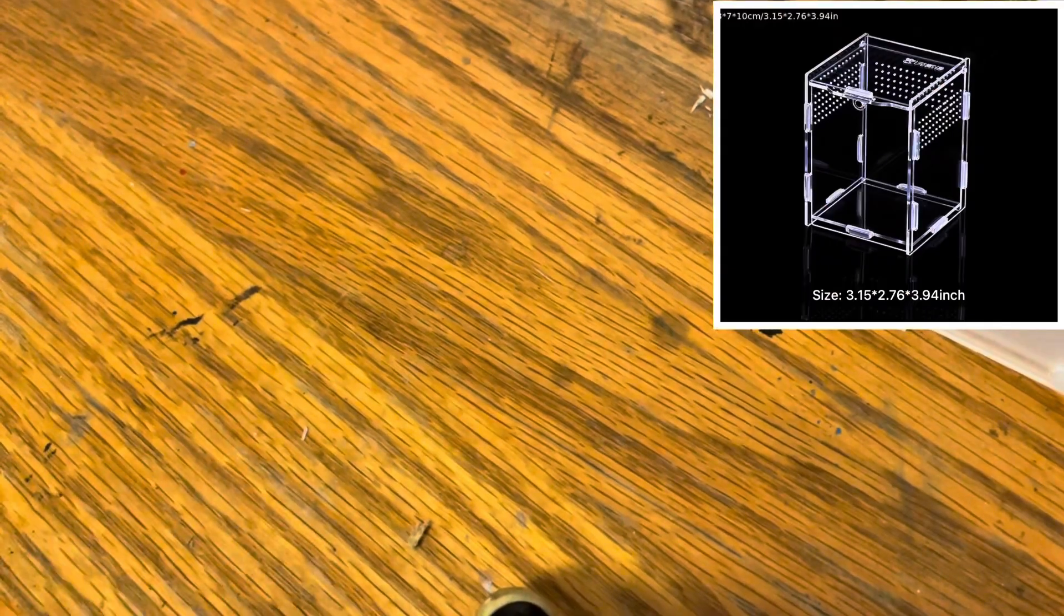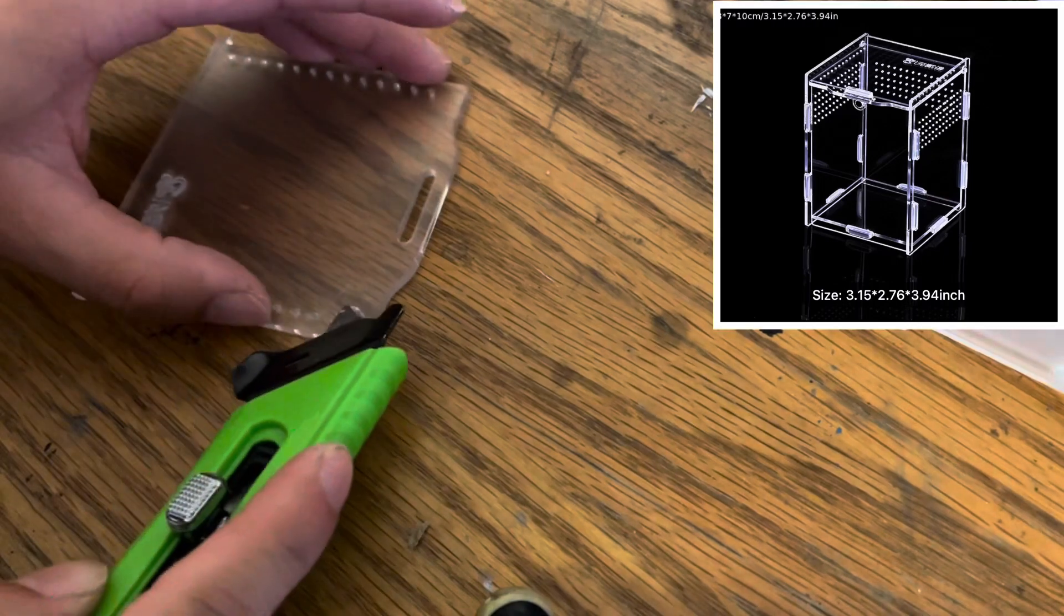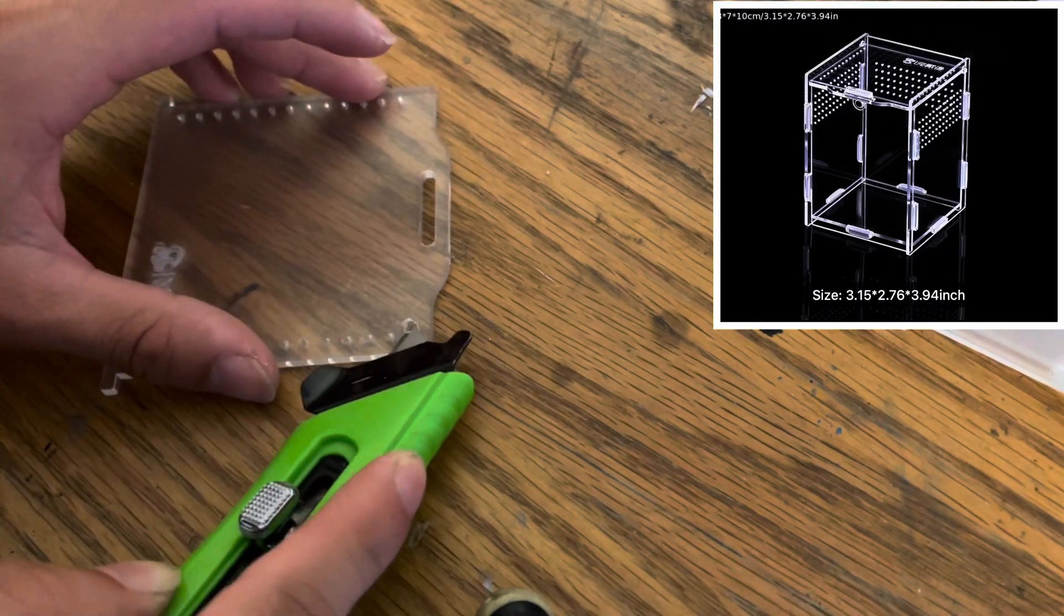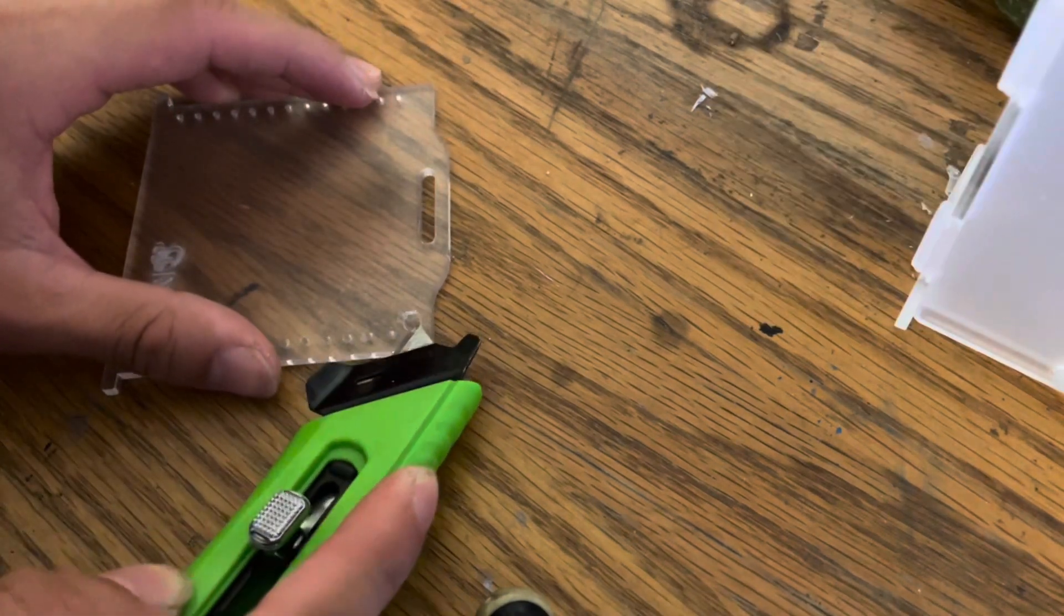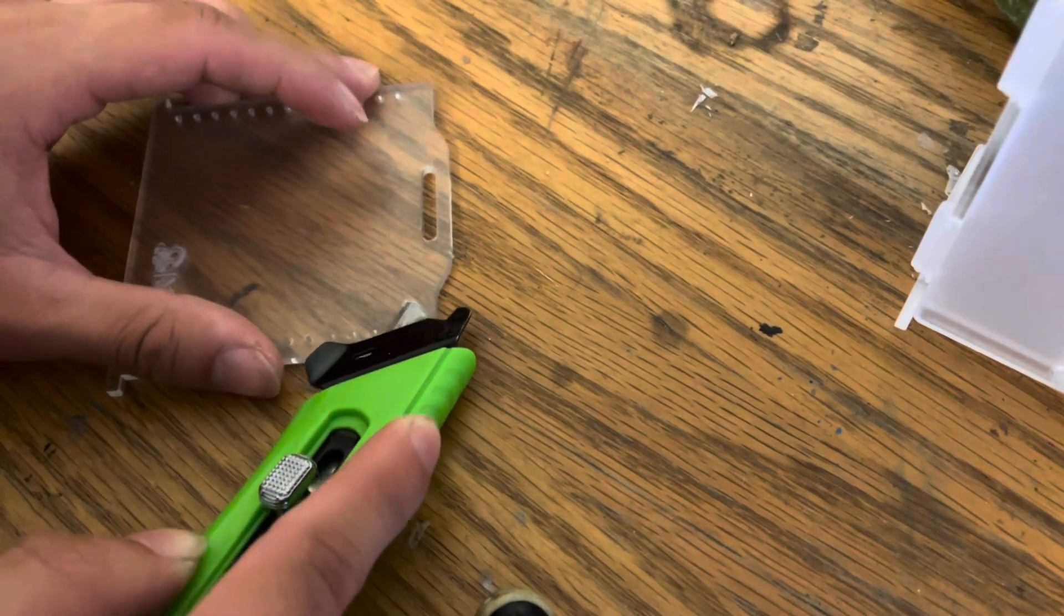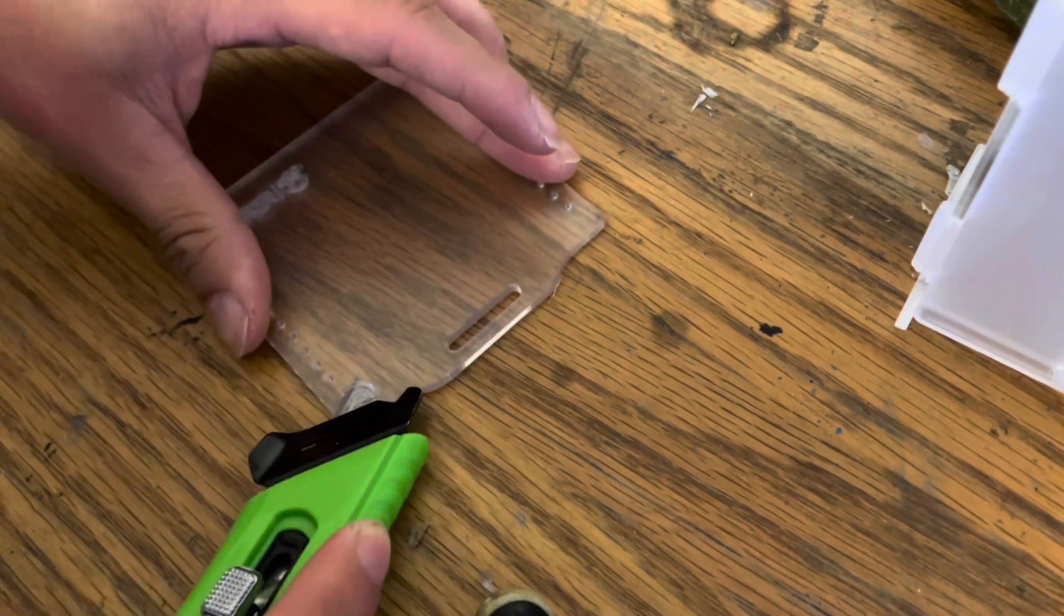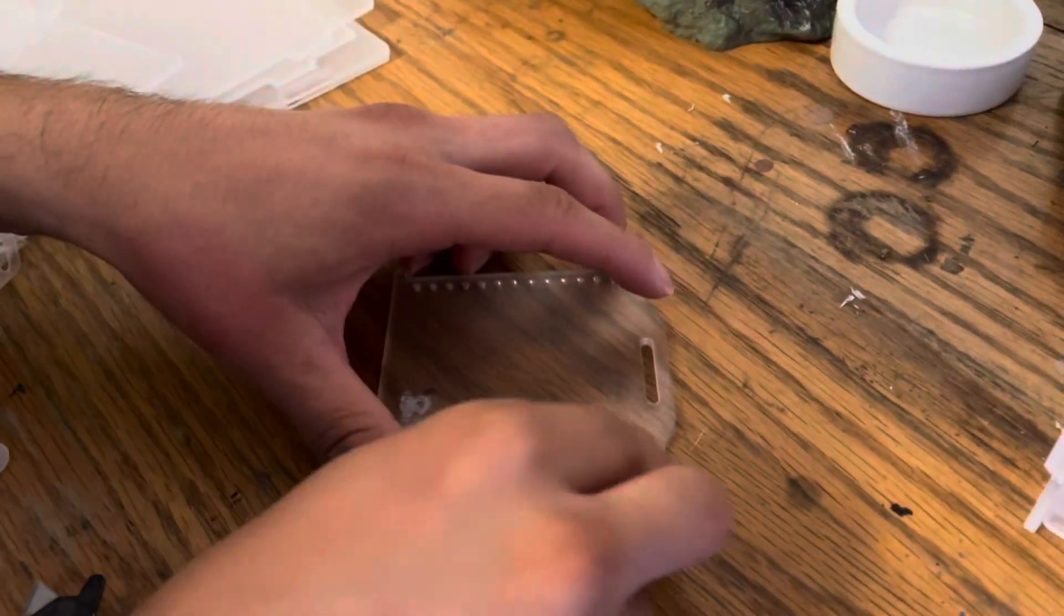So now I'm going to show you guys how I assembled the enclosures that you have to put together. First, you should remove the protective films on each panel. Otherwise, they will just end up looking blurry. I used a box cutter, but whatever you choose to use, just be careful that you don't damage the panels.